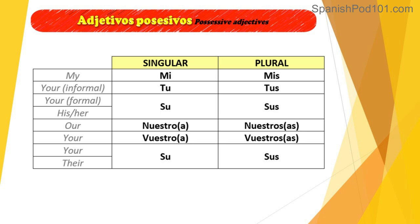'Our' in Spanish: the singular has the masculine form 'nuestro' and the feminine form 'nuestra'. And the plural forms are 'nuestros' and 'nuestras'. Nuestro, nuestra, nuestros, nuestras.